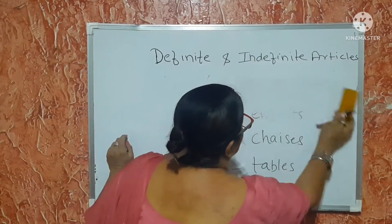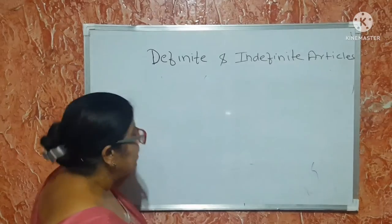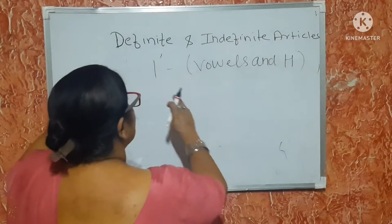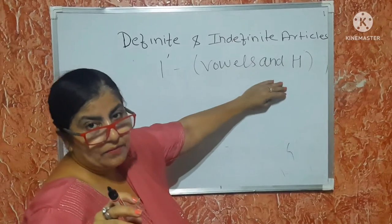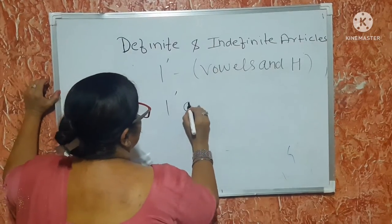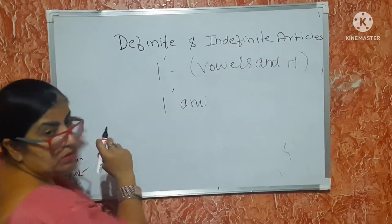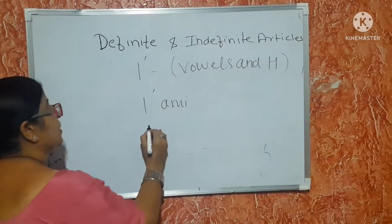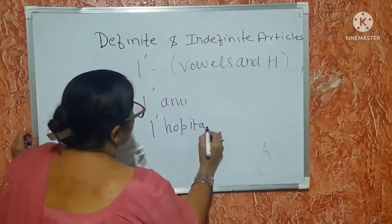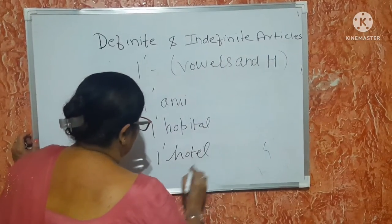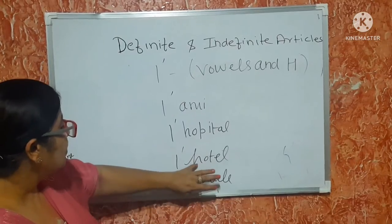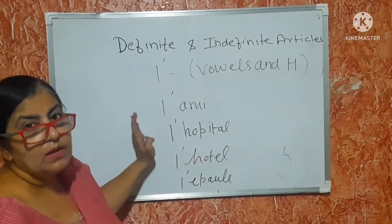The last form in definite articles is l'apostrophe. L'apostrophe is used with vowels and with the sound of H, because H is mute in French. For example, 'l'ami' — using the apostrophe because it starts with a vowel. 'L'hôtel' means hotel. 'L'épaule' means shoulder. Wherever you see a vowel or hear the sound of H, you write l'apostrophe.